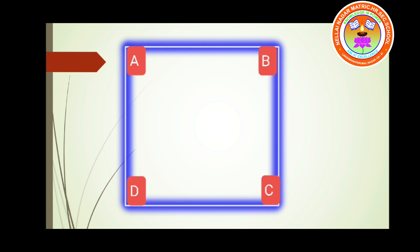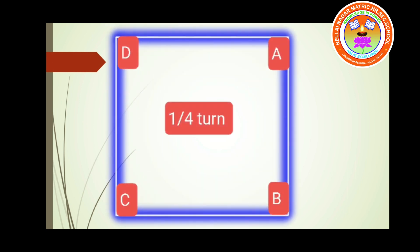Now see that the square turns one-fourth turn. You can observe the alphabets get changed: in the place of A you have D, in the place of B you have A, in the place of C you have B, and in the place of D you have C. So the square has been rotated one-fourth turn.